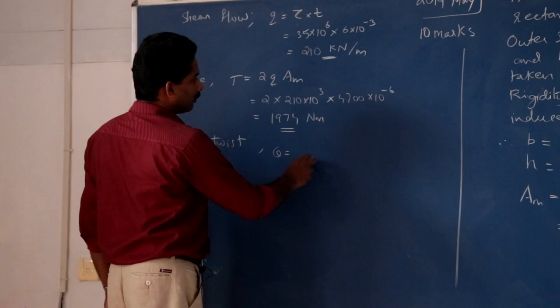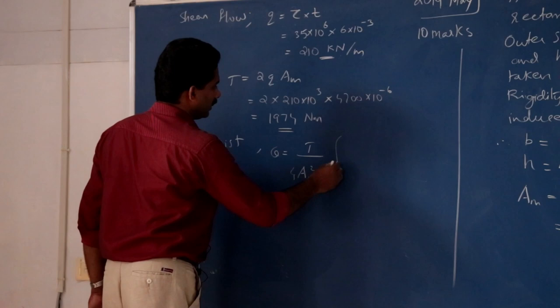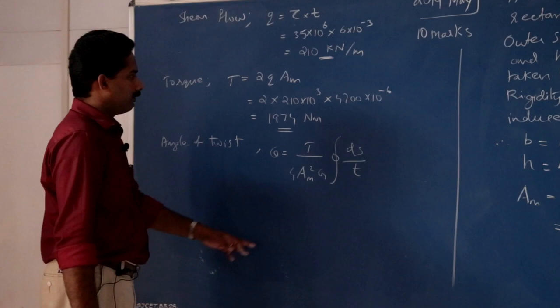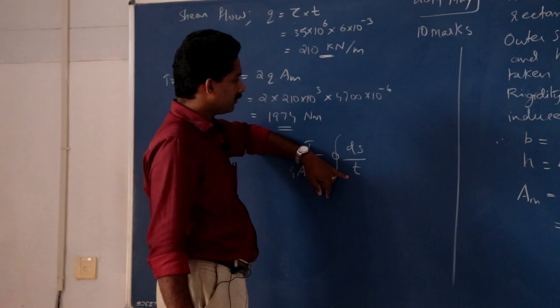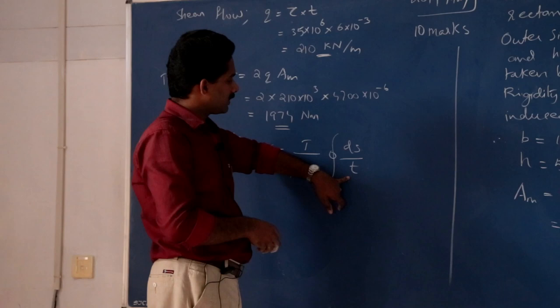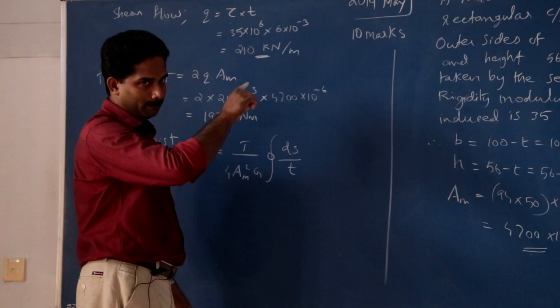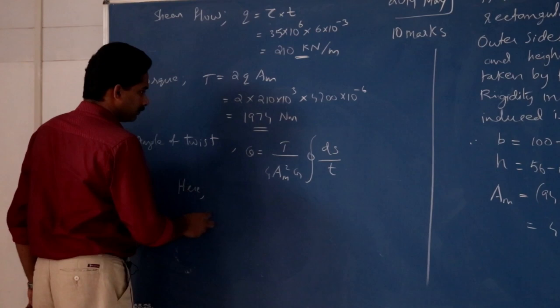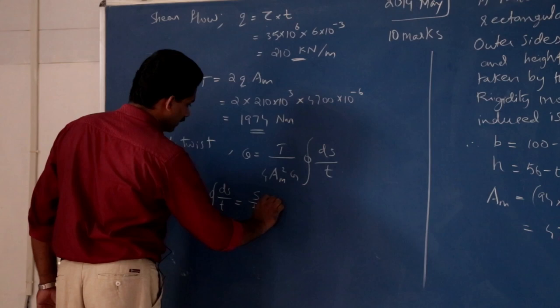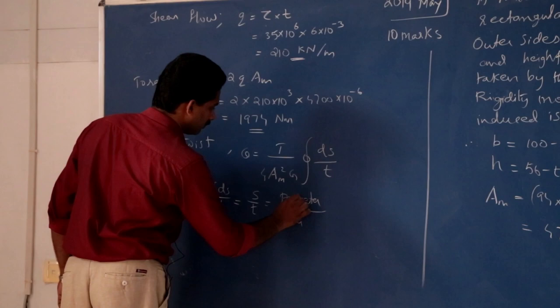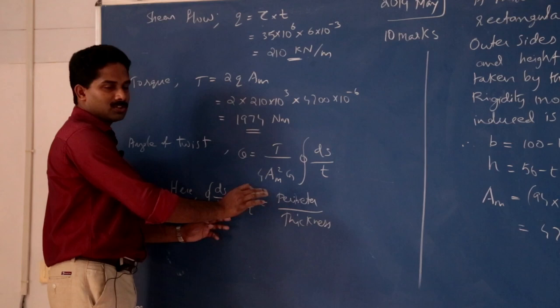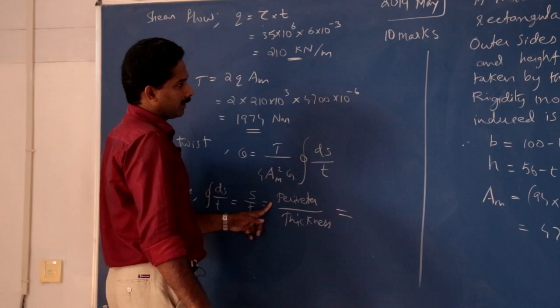Angle of twist is equal to T divided by 4Am squared into G, into integral ds by t. Since thickness is constant, integral ds by t equals perimeter divided by t. How much is the perimeter? Rectangle — median perimeter. Median length: 94 and 94 and 50 and 50. Thickness is t.